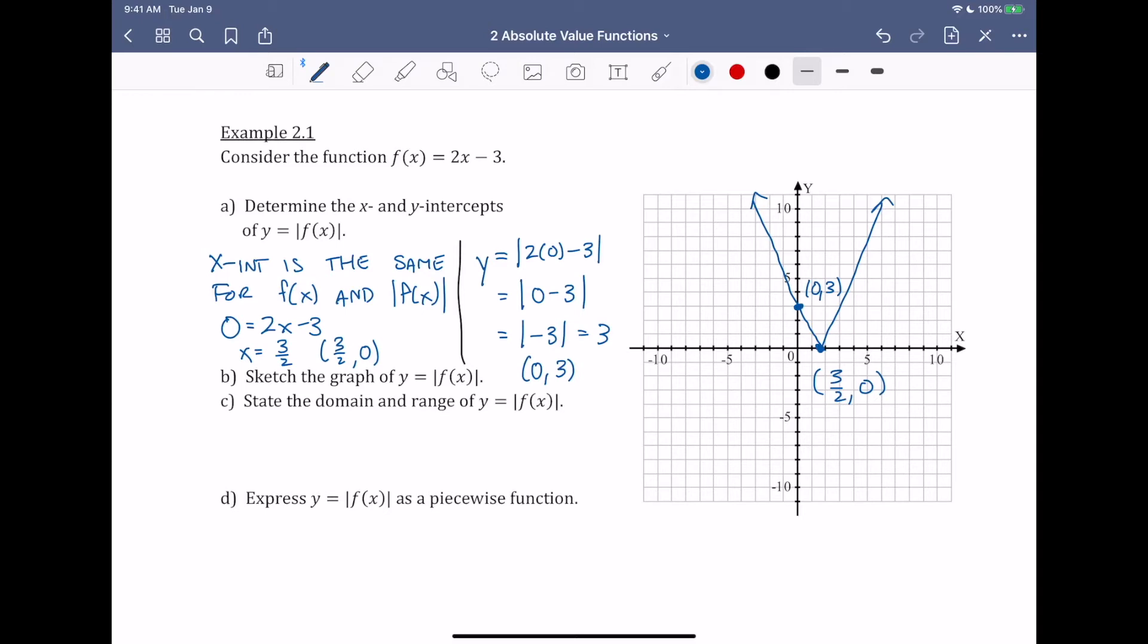Part C, state the domain and range of y = |f(x)|. For absolute value functions, the domain remains unchanged. So our domain here would be the same as f(x) = 2x - 3. So for 2x - 3, our domain is x ∈ ℝ.